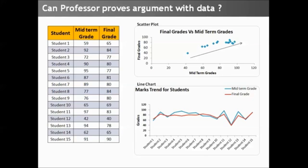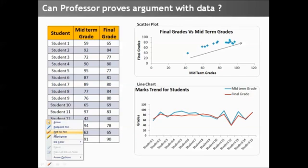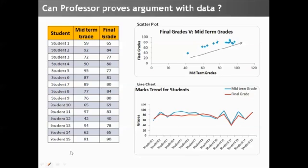The same can be demonstrated using a line chart. Although, x, y scatter is a better way to do so. As the midterm grades go up, the final grades also go up. And as they go low, the final grades go low.